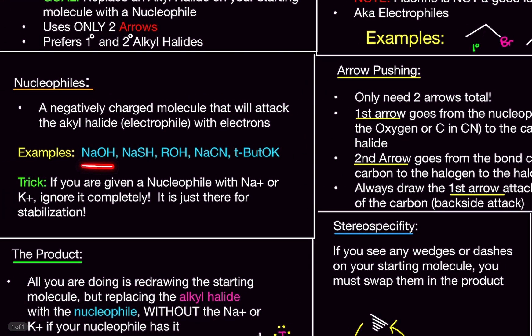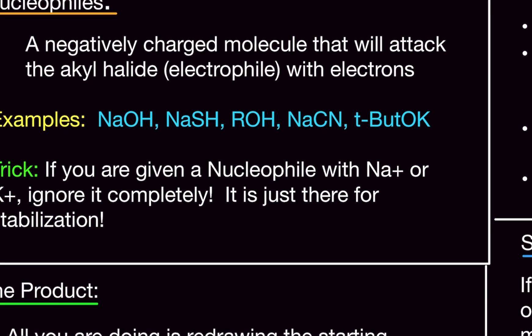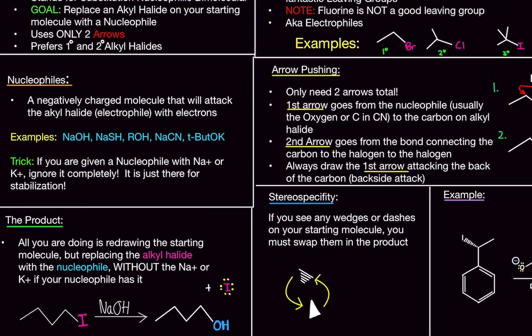All of these, you'll see on a test. So, here we have sodium hydroxide, we have sodium cyanide, potassium tert-butoxide. But here's the trick. If you are given a nucleophile on your test or practice problems with sodium or potassium attached to it, just ignore it. It's just there to confuse you. It's just there for stabilization. For example, here we have sodium hydroxide. Just pretend sodium isn't there. That's how you do the problems.